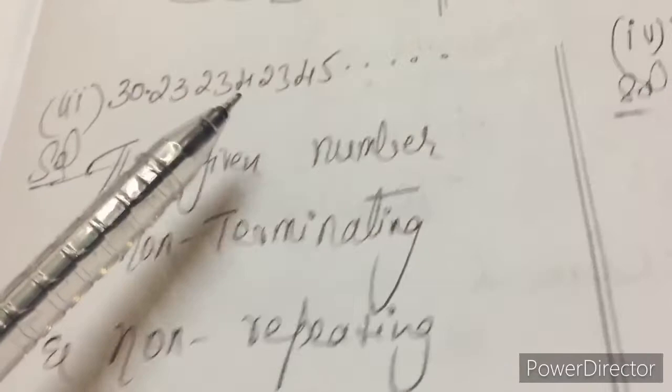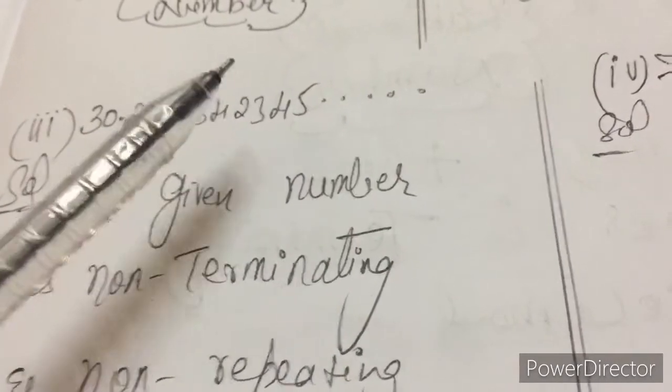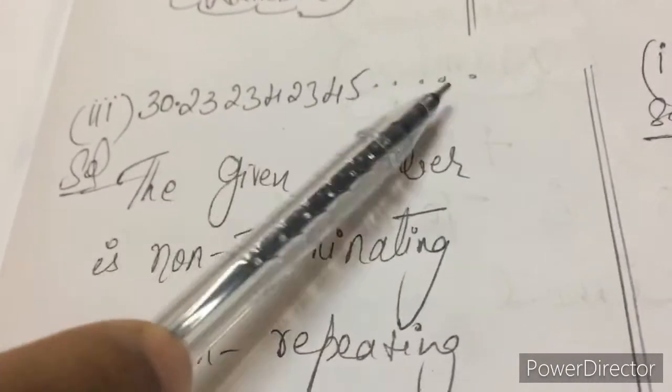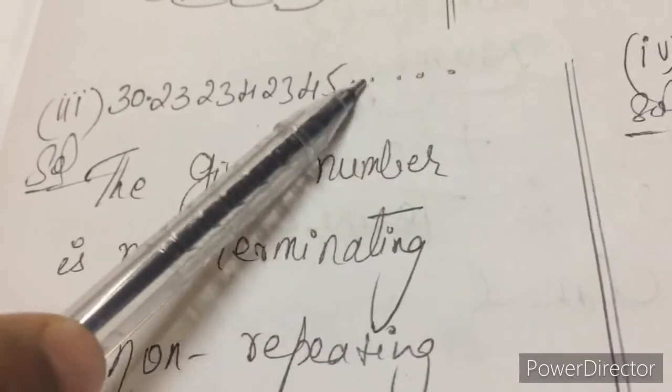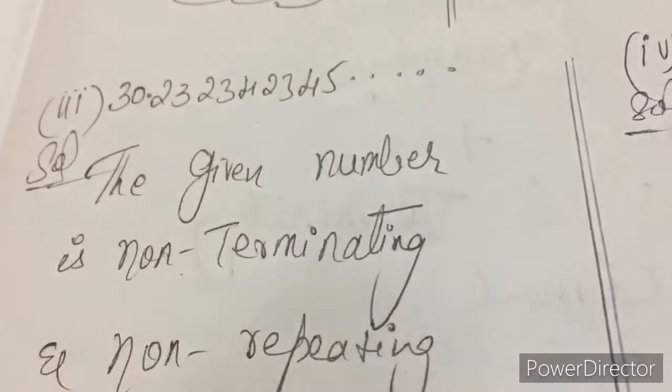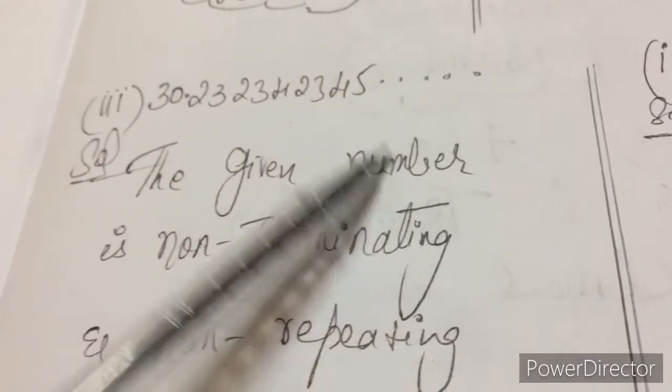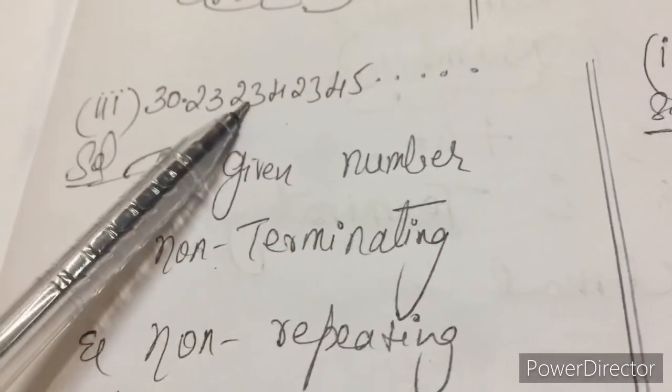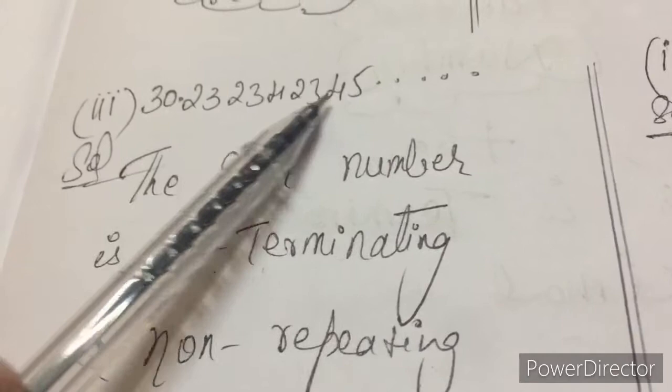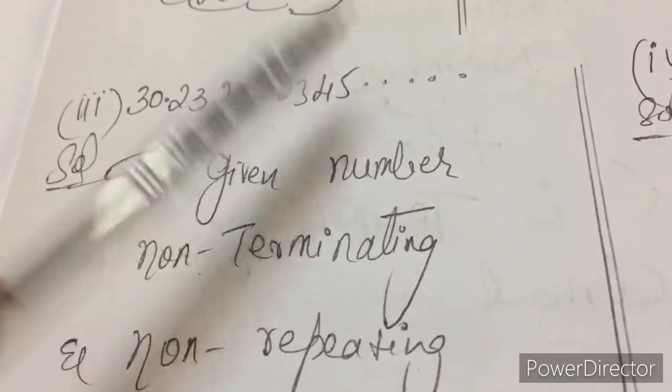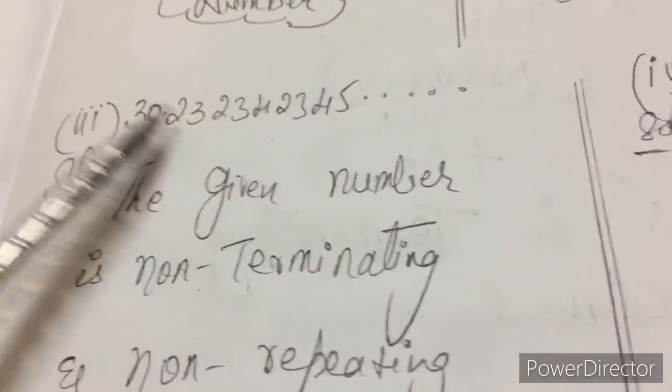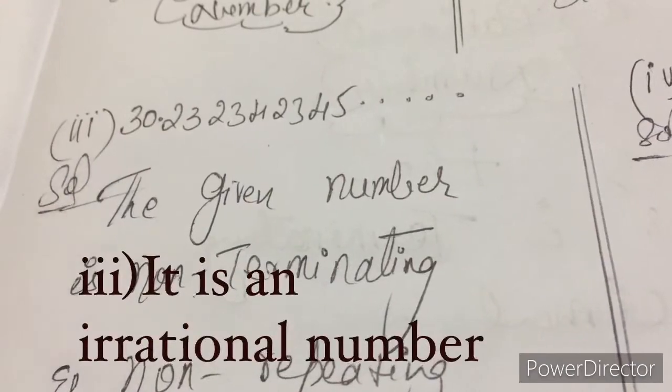The number which is non-terminating and non-repeating, it is not going to stop. See here, so on. The number is repeating. It is going on. It is not terminating. And this 23234, 23456 and so on is non-repeating decimal. It is an irrational number.